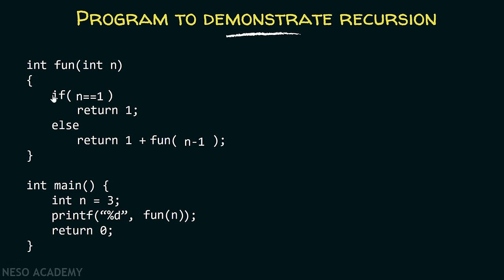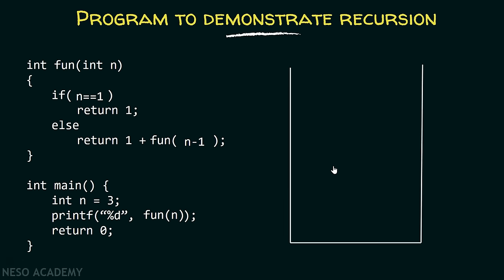Now let's see this program which will help us understand recursion. Whenever a function is called, its activation record will be maintained inside the stack. As recursion is no exception, here in this case also we will consider one stack, and here we will maintain the activation records of the functions we are calling.